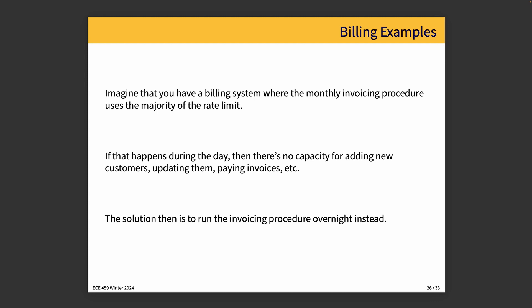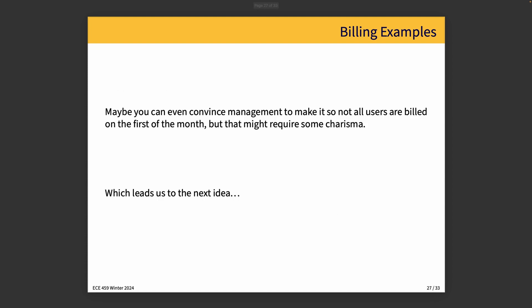Consider a billing system where monthly invoicing uses the majority of the rate limit. If that happens during the day, there might not be available capacity for things like creating a new customer, updating them, or paying an invoice. The solution: run the invoicing procedure overnight. Most people aren't using the system at night — maybe not zero, but certainly much closer to zero than at noon. You could also convince management to spread billing across the month rather than all on the first day, reducing the peak on any one day.